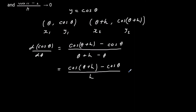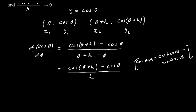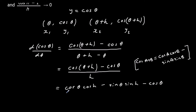Now we're going to use the cos(a + b) formula. cos(a + b) = cos a cos b − sin a sin b. So cos(theta + h) expands to cos theta cos h − sin theta sin h. We still have the minus cos theta, all over h.